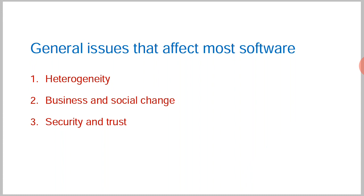If you restrict your software to one hardware configuration, it will automatically flop in the market because there is heterogeneity today. Many different companies manufacture hardware devices with different technologies. Under all these varied hardware circumstances, your software should be capable of running. We cannot restrict our software to a particular architecture — that is a very bad idea. Every software industry needs to address heterogeneity, ensuring compatibility with any type of hardware technology that exists today.